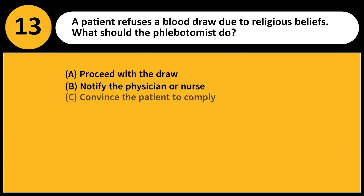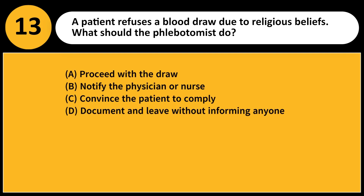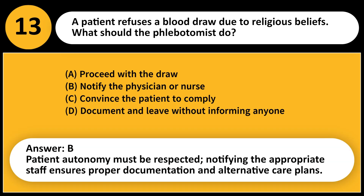A patient refuses a blood draw due to religious beliefs. What should the phlebotomist do? A. Proceed with the draw. B. Notify the physician or nurse. C. Convince the patient to comply. D. Document and leave without informing anyone. Answer: B. Patient autonomy must be respected. Notifying the appropriate staff ensures proper documentation and alternative care plans.